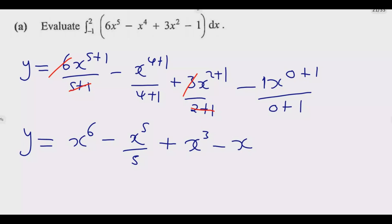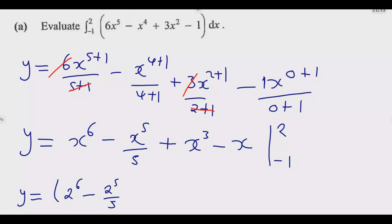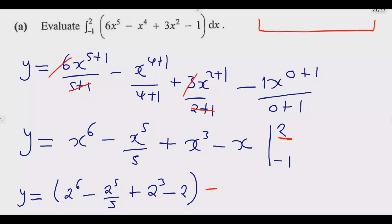The next step is to find the values over this interval. We start with the upper value of 2, so we calculate: 2 to the power 6, minus 2 to the power 5 over 5, plus 2 to the power 3, minus 2. That is substituting x=2 first. Then for the second interval we subtract the values at x = negative 1.